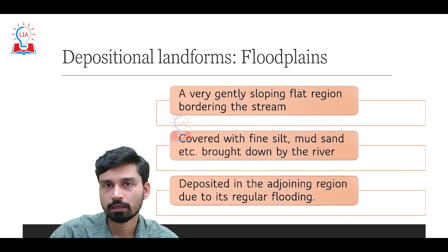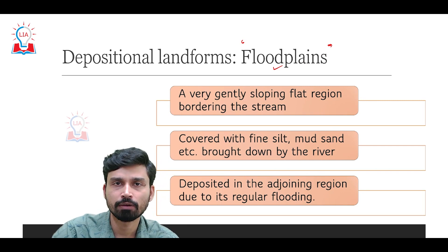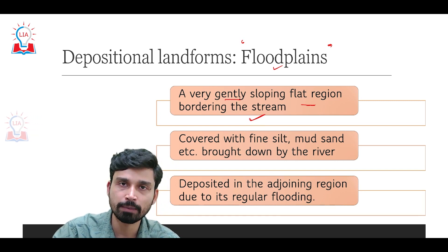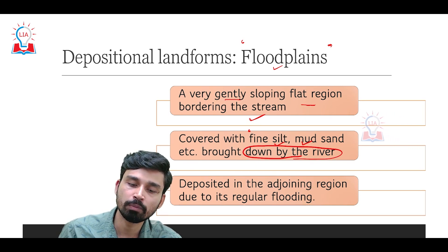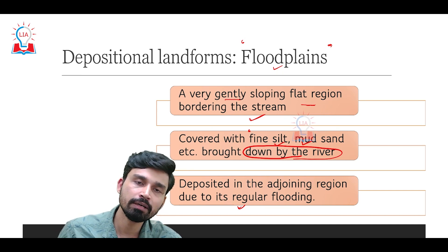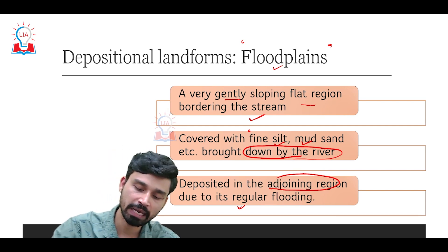After forming the alluvial plain, when the river flows at very slow to moderate velocity and the gradient is very low, we see development of what we call floodplains. Floodplains can be defined as a very gently sloping flat region that borders the river stream. They are covered by a large amount of medium to small-sized sediments such as silt, mud, sand, clay, and loam, which are brought down by the river. When regular flooding occurs, the river over-spills from its banks and deposits sediment particles in the adjoining regions.